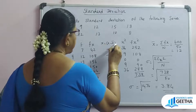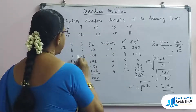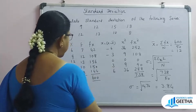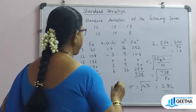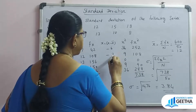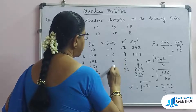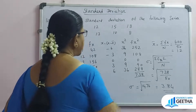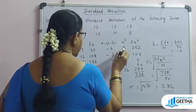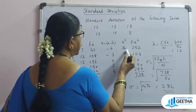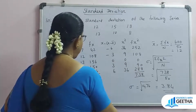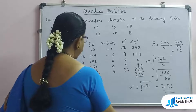With x-bar equal to 12, compute small x for each value: 6 minus 12 is minus 6; 9 minus 12 is minus 3; 12 minus 12 is 0; 15 minus 12 is 3; 18 minus 12 is 6. Then compute small x squared: 36, 9, 0, 9, 36. Multiply f by x squared to get fx squared: 7×36=252, 12×9=108, 13×0=0, 10×9=90, 8×36=288.